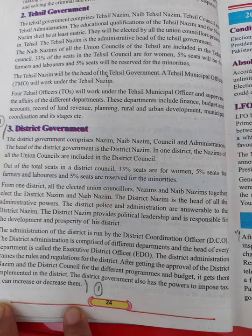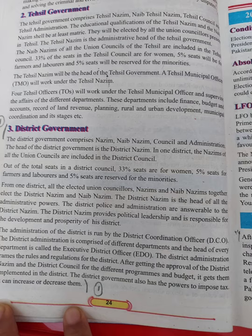The district government comprises Nassim, Naib Nassim, council, and administration. The head of the district government is the district Nassim. Naib Nassim is his assistant, and all the union council Nassims are members of the district council and administration. Out of the total seats in the district council, 33% seats are for women, 5% seats for farmers, and 5% seats for minority. From one district, all elected union councilors, Nassim and Naib Nassim together elect the district Nassim and Naib Nassim for four years.